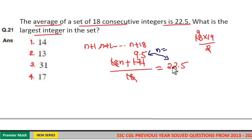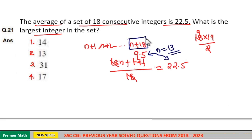n is equal to 20 minus 7, which is 13. So if n is 13, the largest integer is n plus 18, which is equal to 13 plus 18, which is 31.